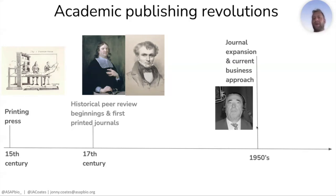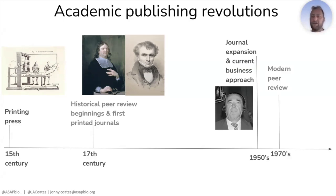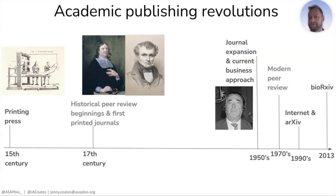We then start picking up pace. In the 1970s, we have the establishment and widespread adoption of peer review as we'd recognize it. Then in the 1990s, we got the Internet and arXiv, the physics preprint server. And then in 2013, we had BioRxiv. I want to stop there because there's a section later on where we'll talk about what the current system looks like.